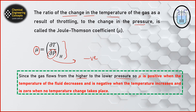The Joule-Thomson coefficient μ will be positive when the temperature of the fluid decreases — final minus initial is negative, and the denominator is also negative, so μ is positive. If temperature increases, the numerator is positive and the denominator is always negative, so μ becomes negative. μ will be zero when there is no temperature change taking place.